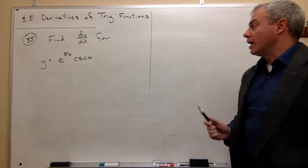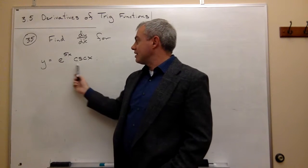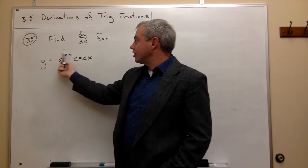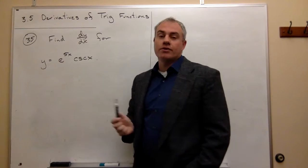All right, so first and foremost, what I look at when I see this problem, I see I've got a function, e to the 5x, times another function, cosecant of x. And so I've got a function times a function,